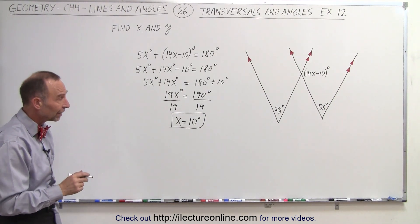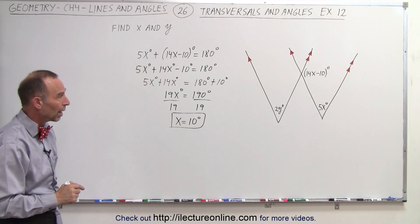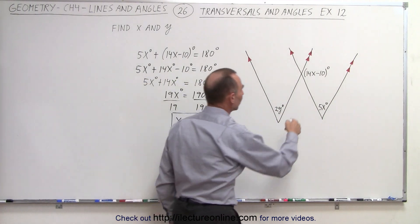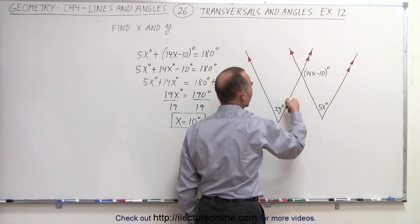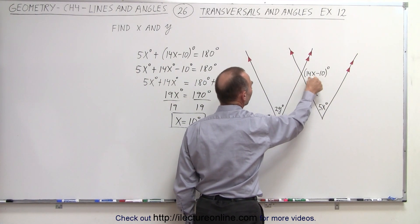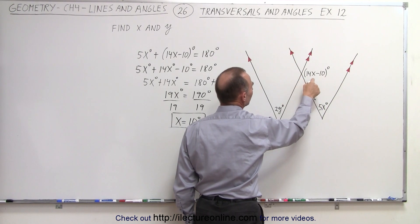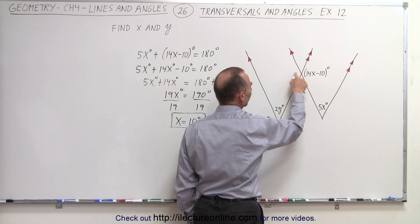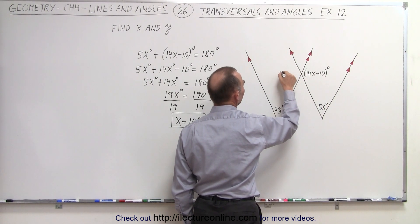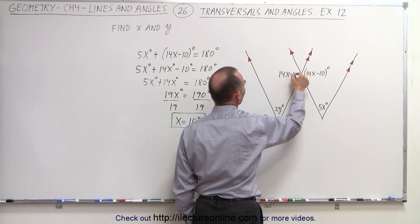All right, now that we have that, how do we find the value for y? Well, first of all, notice that these are two lines that cross one another, and we can say that opposite angles must be equal, which means if this angle is 14x minus 10 degrees, then this angle must be 14x minus 10 degrees.